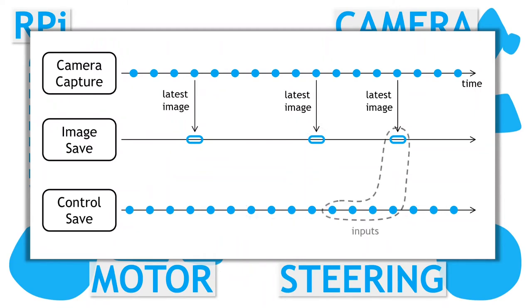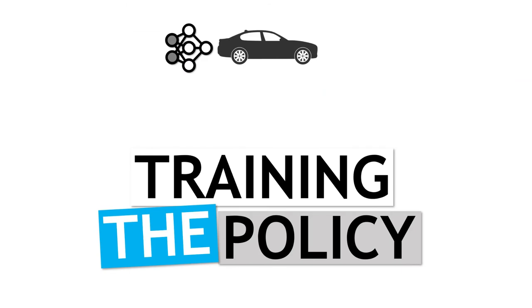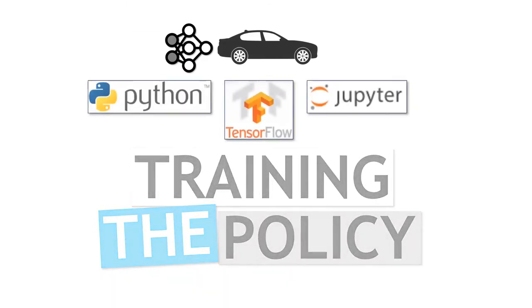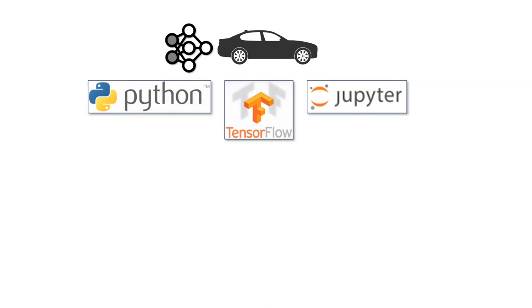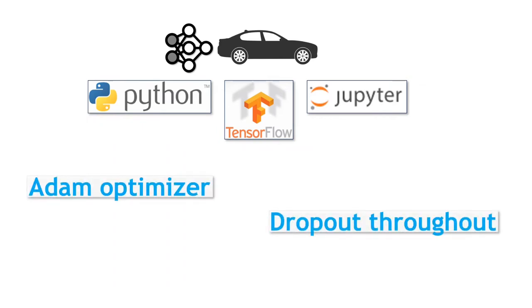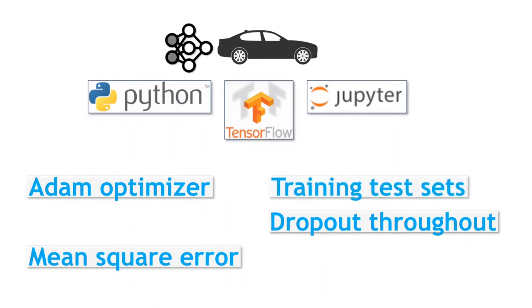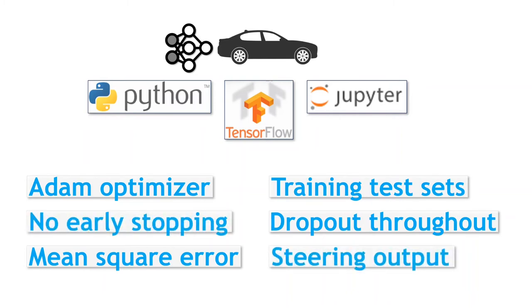With our parsed training data, we are now ready to train the model. I don't plan on going into the details of training, except to say I use Python, TensorFlow, and run it all in Jupyter notebooks. I use common practices. I'm using dropout throughout the model. I use the Adam optimizer with a mean square error loss. I separate the data into training and test sets to evaluate the results. I don't use early stopping. And just a heads up, in these initial stages, I am only looking at predicting the future steering outputs. I will consider the speed prediction at a later stage.